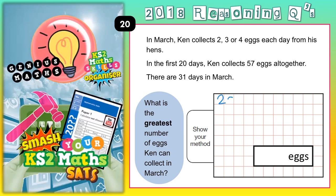In his first 20 days he's got 57, so we need to bear that in mind. There are an extra 11 days, so we need to think about those extra 11 days. We're trying to find the greatest number of eggs he could get.